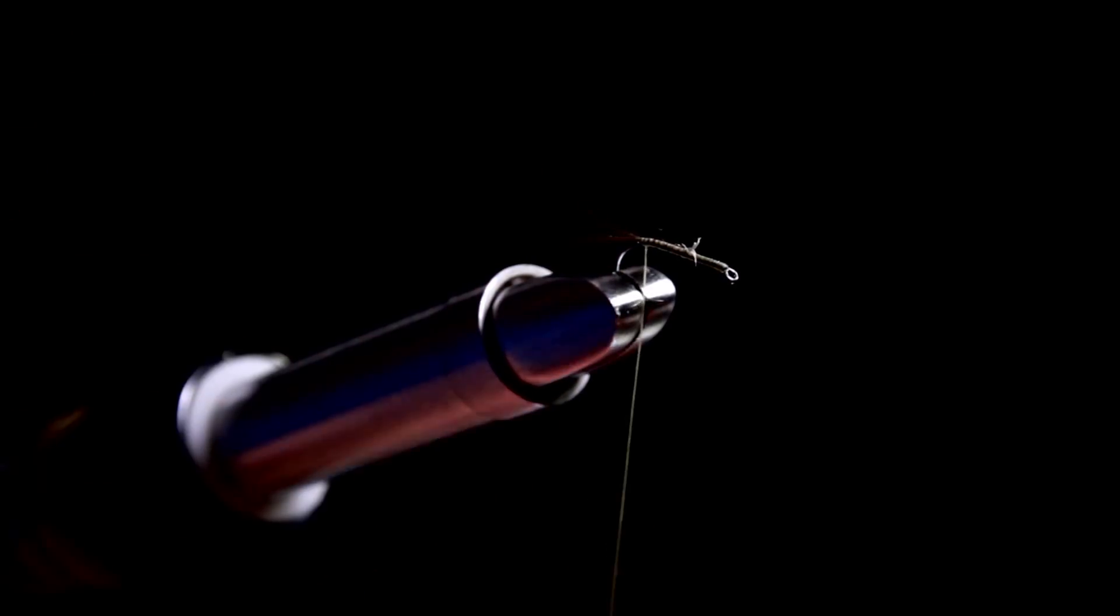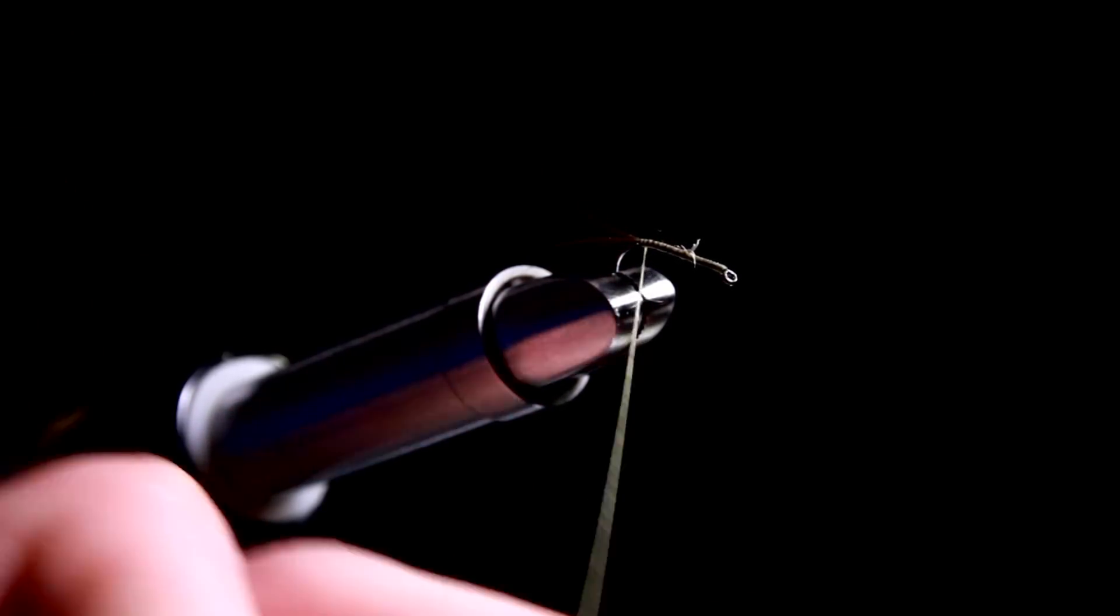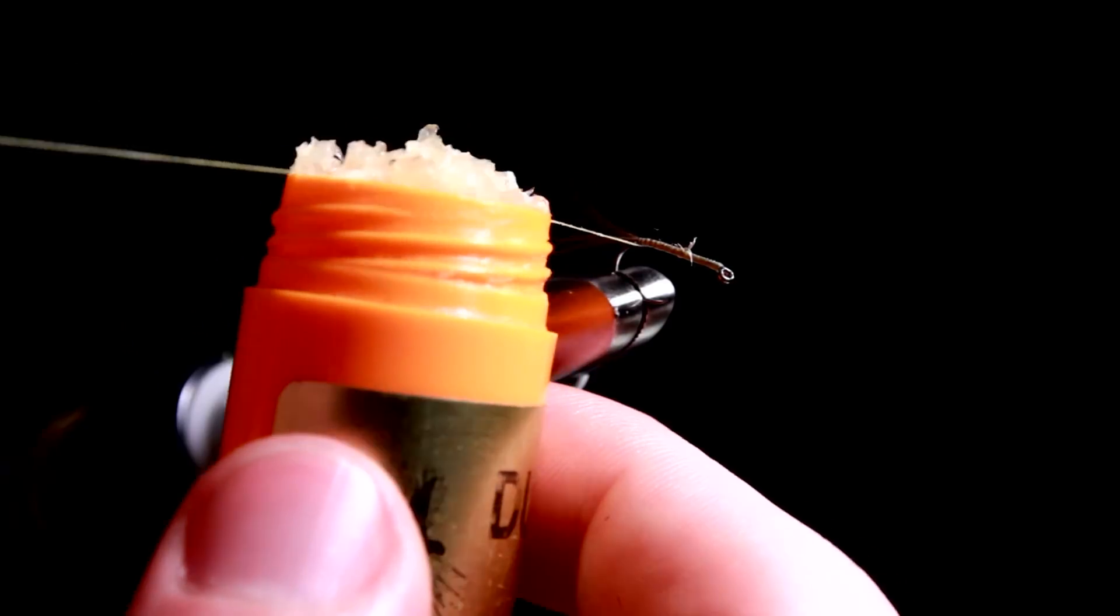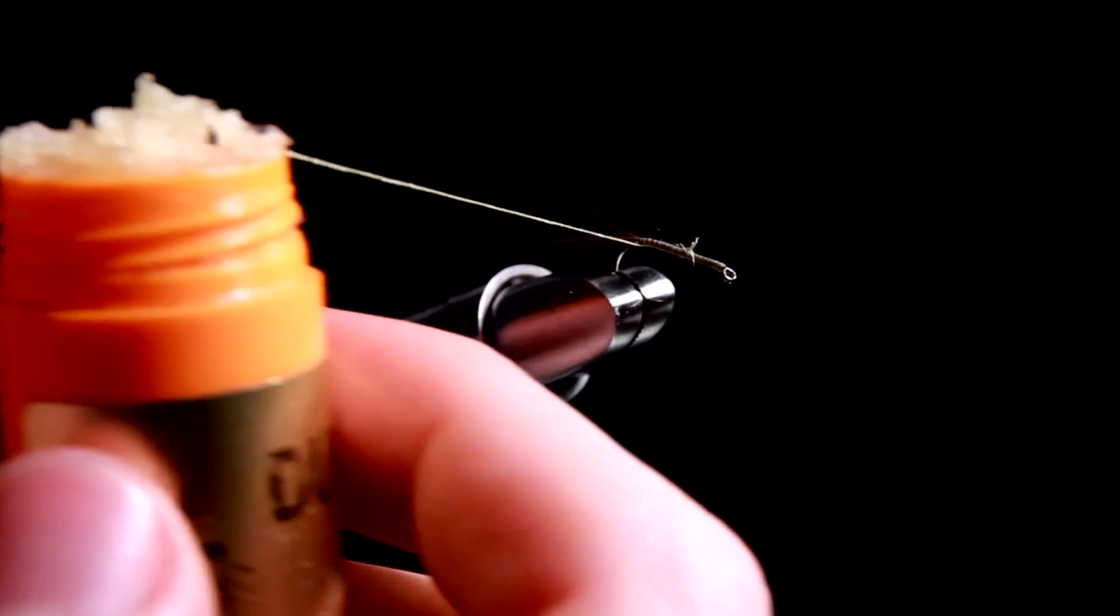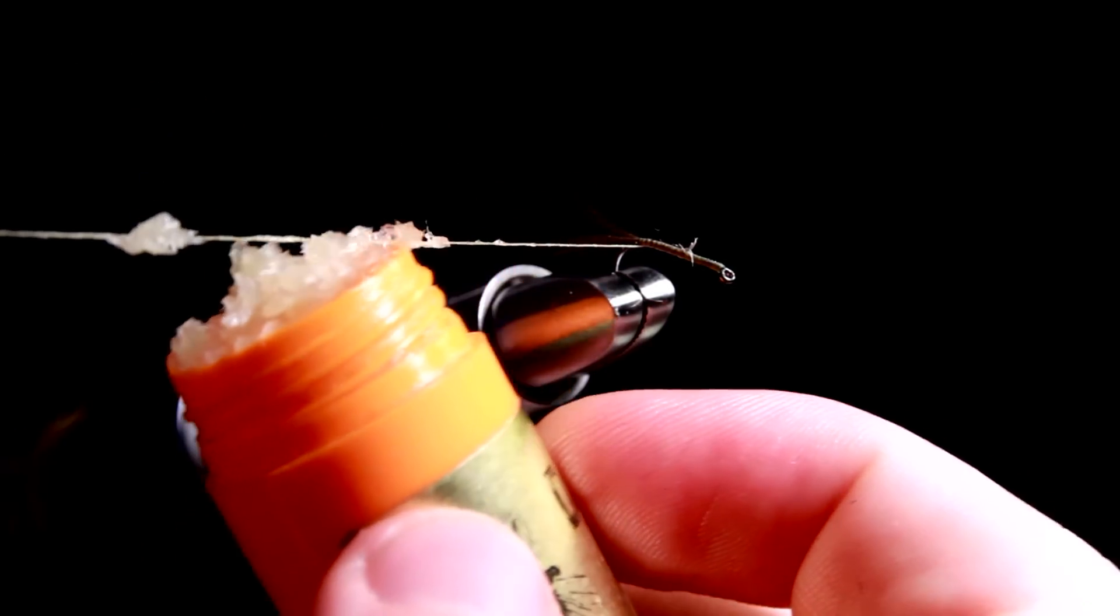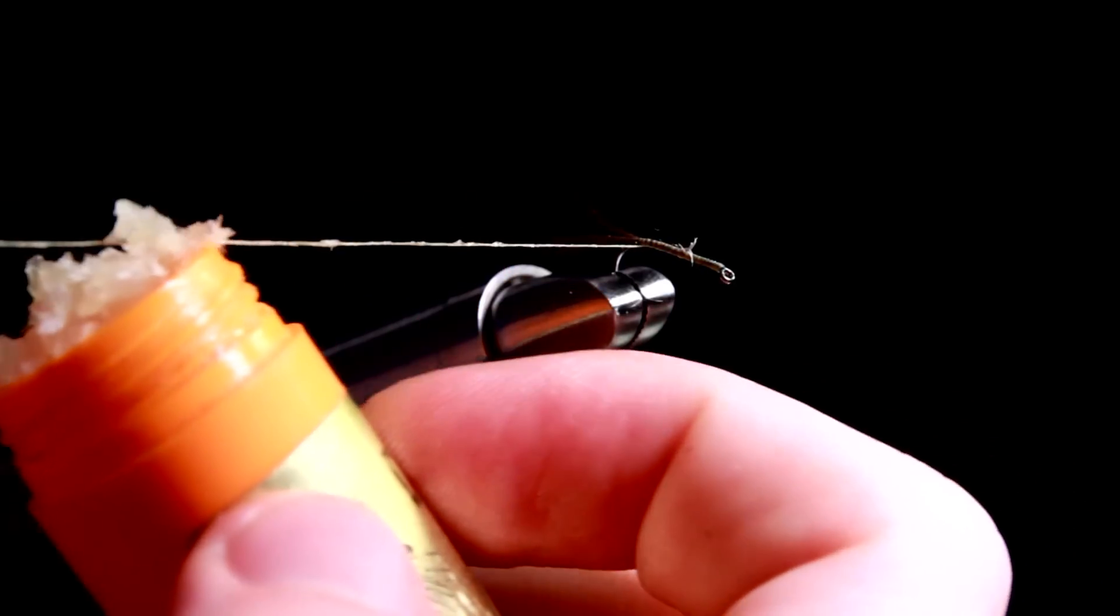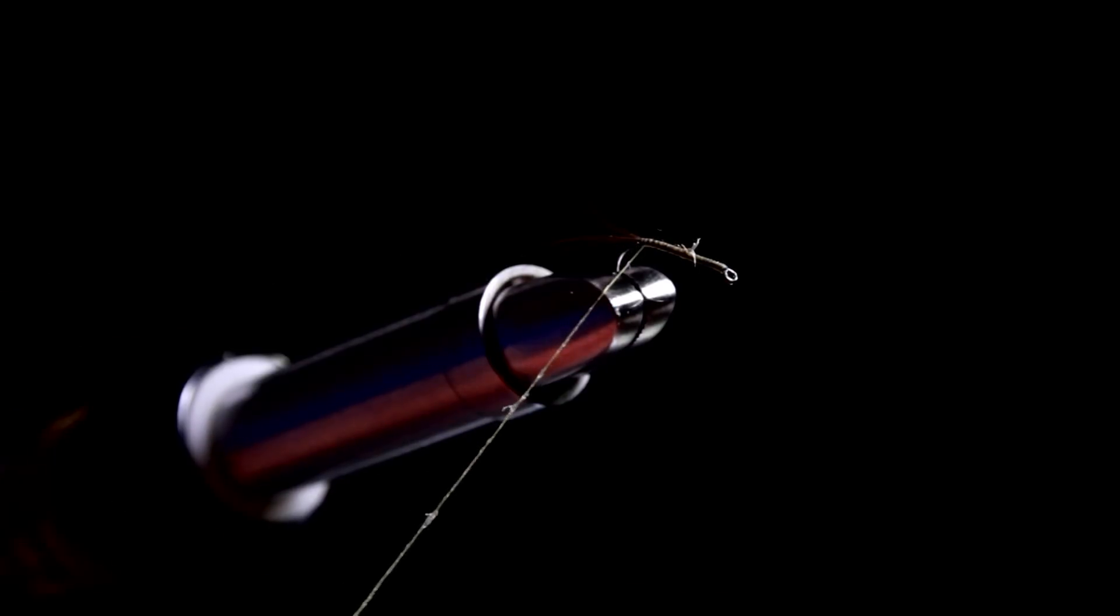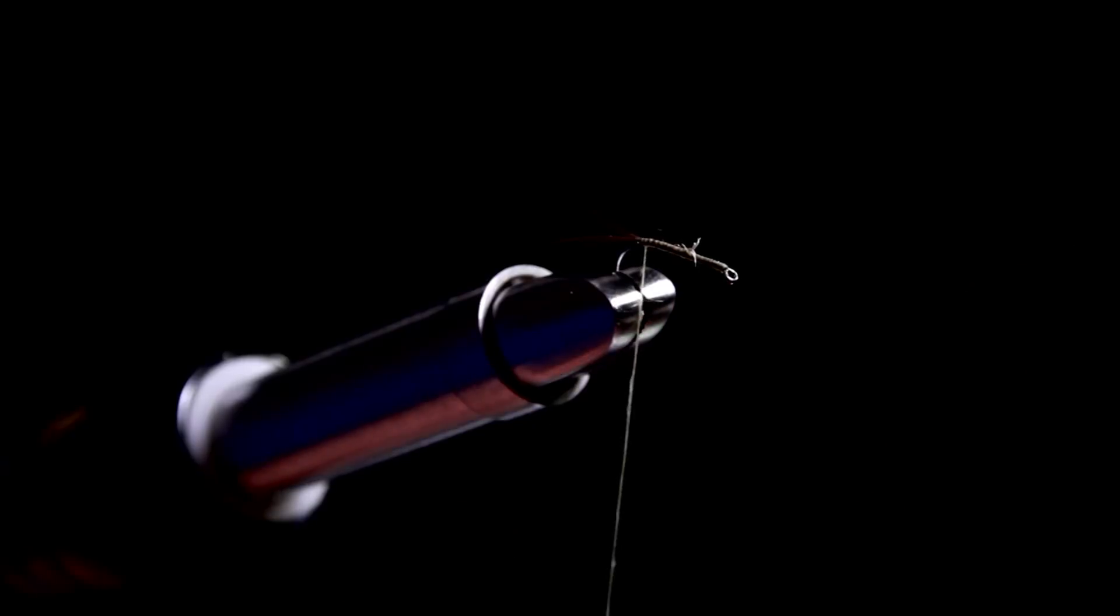And we should wax the silk as well. When you're handling seals fur, it's a rather difficult material to dub to the thread. In this specific case, since it's a flimf, I want the body to be rather fluffy. So I will split this silk and put the seals fur in the split silk.